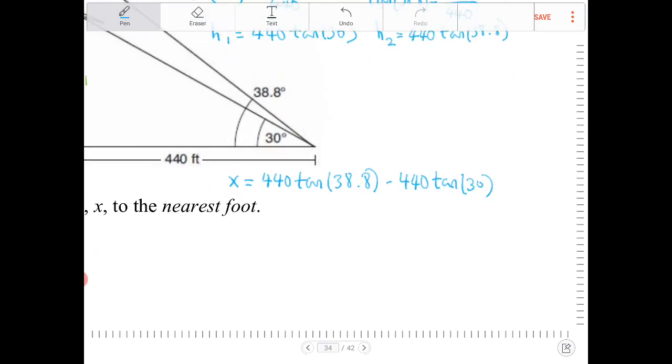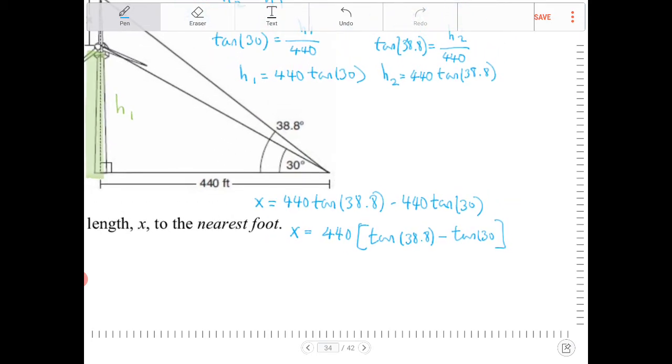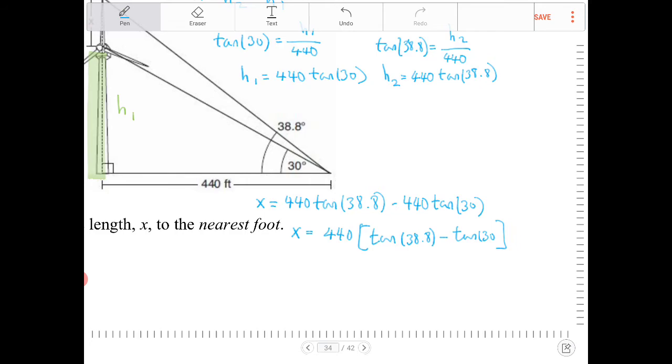Notice there's a common factor of 440. Factoring it out, x equals 440 times (tan 38.8 minus tan 30). I'm going to enter this into the calculator now. I could have figured out h1 and h2 separately, but I'm entering everything at once.